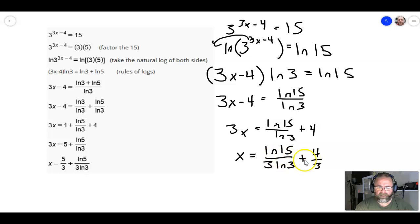So, that's going to give me x is equal to natural log of 15 over 3 times the natural log of 3, because we multiplied this first term by 1 third, plus 4 over 3. And this answer right here should be equivalent to that answer right there.